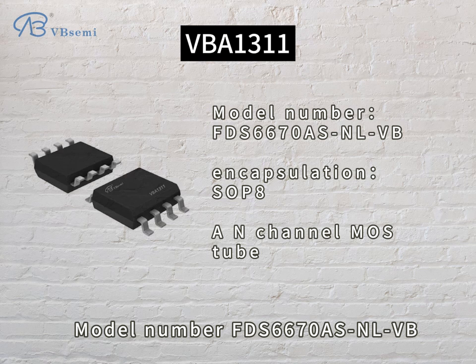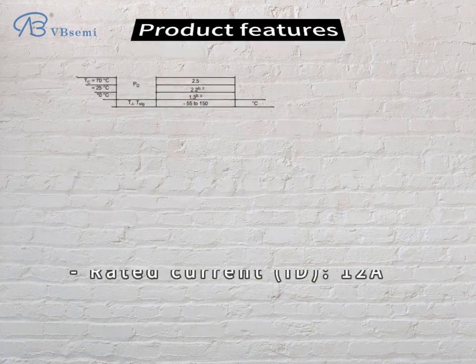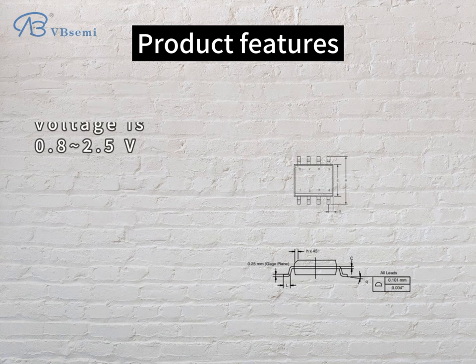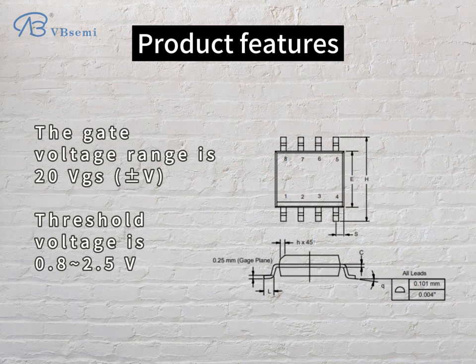The model is FDS6670SNLVB. Rated voltage VDS is 30V, rated current ID is 12A. The gate voltage range is ±20V VGS, and the threshold voltage is 0.8–2.5V.